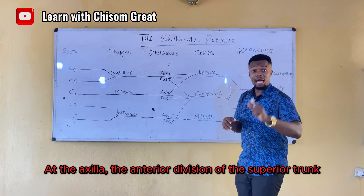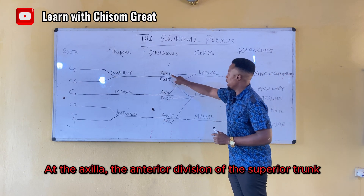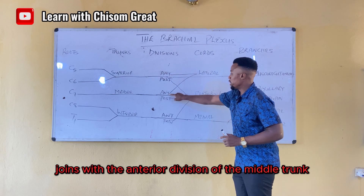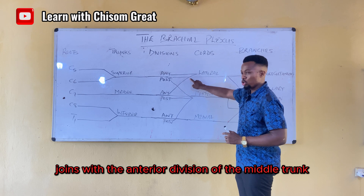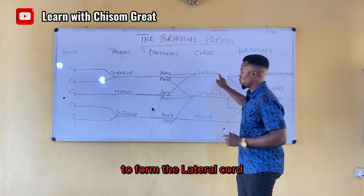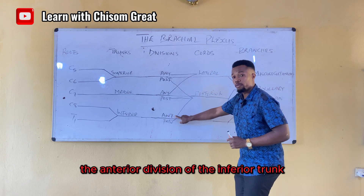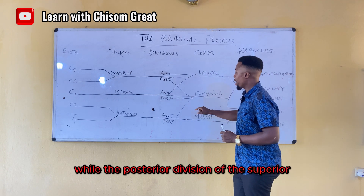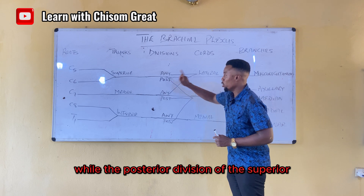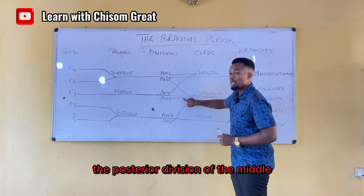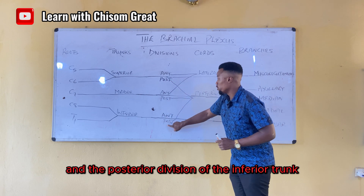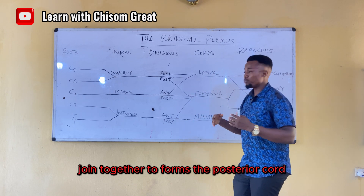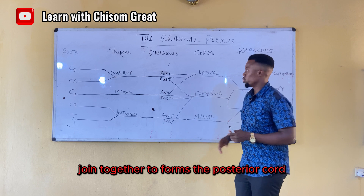To repeat: at the axilla, the anterior division of the superior trunk joins with the anterior division of the middle trunk to form the lateral cord. The anterior division of the inferior trunk forms the medial cord, while the posterior divisions of the superior, middle, and inferior trunks join together to form the posterior cord.